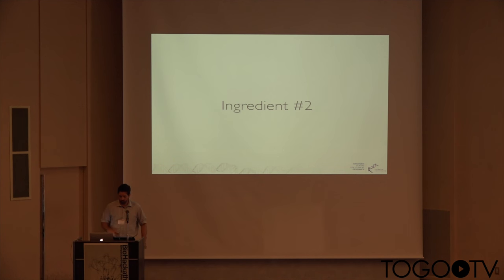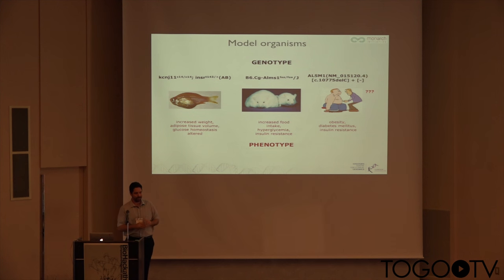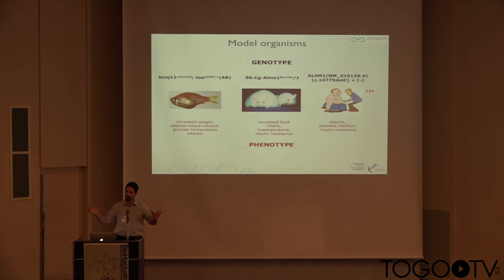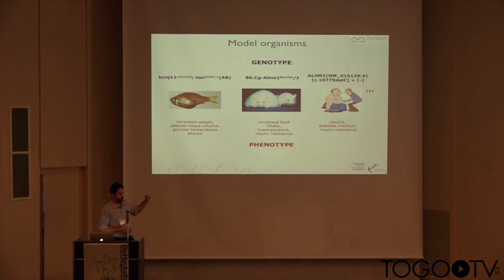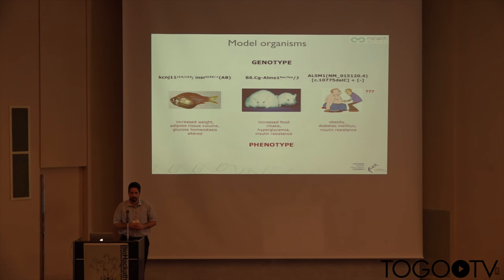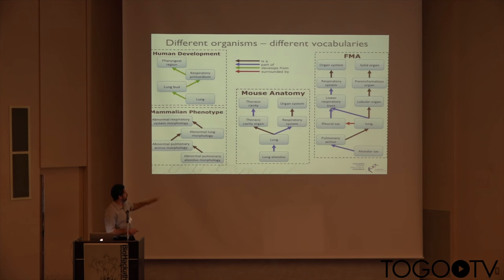The second ingredient — exactly as previous speakers have mentioned — is cross-species phenotype integration, or more broadly, model organisms. You see here an example where on the left we have zebrafish with a variant associated with a set of phenotypes, a similar model in mouse with a different variant in a homolog gene and a very similar phenotypic profile, and then a human with another variant and yet another phenotype profile. Those three phenotype profiles are very similar but are not expressed using the same language, simply because you have different organisms, each described by means of different ontologies.